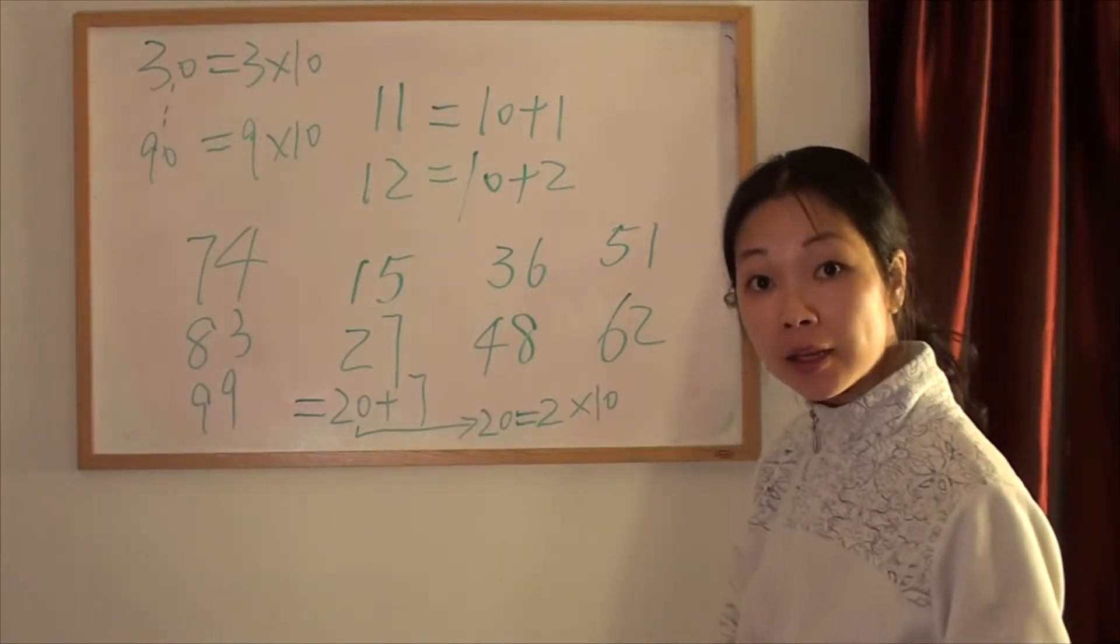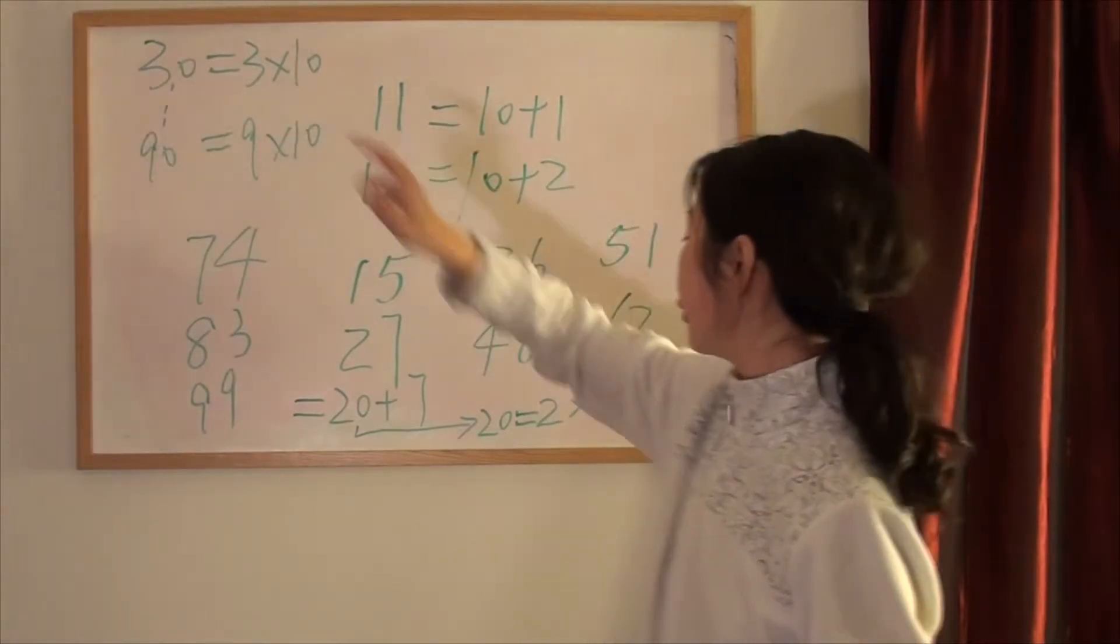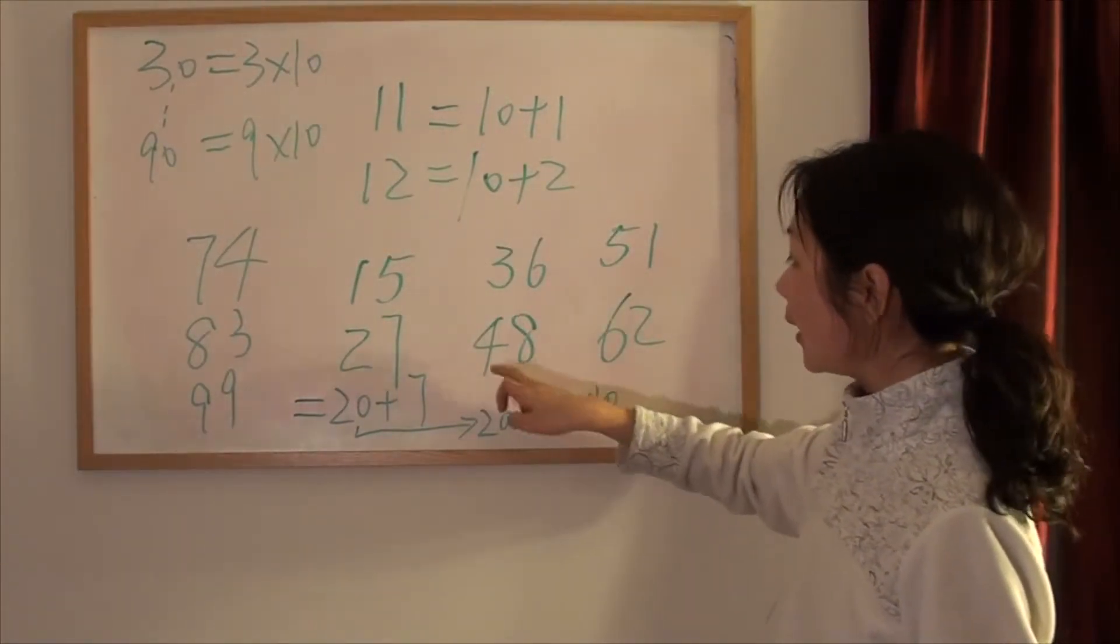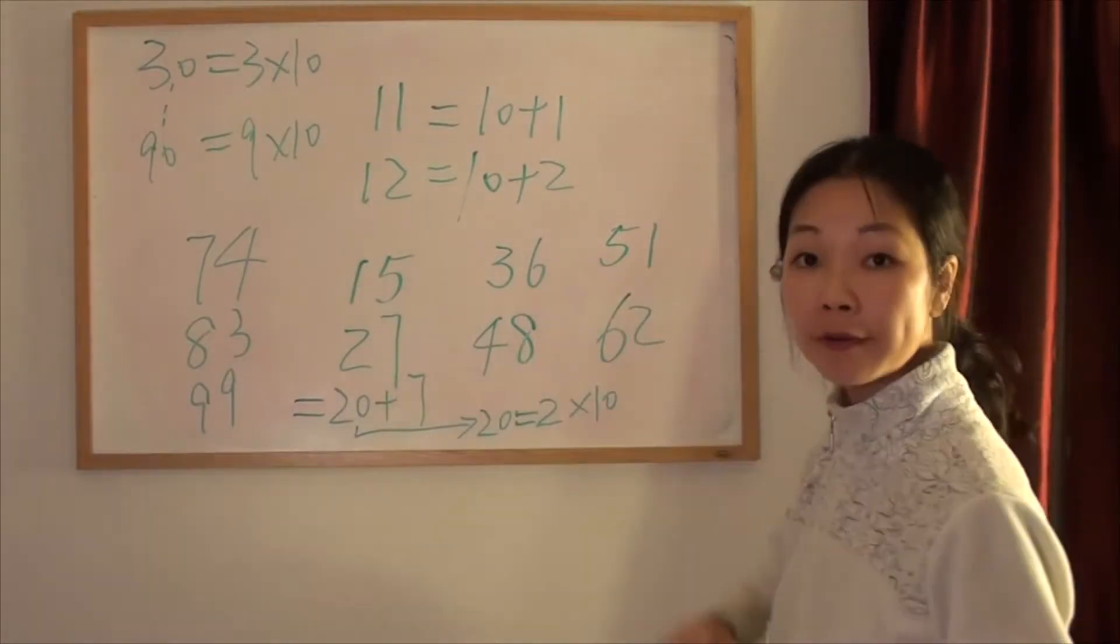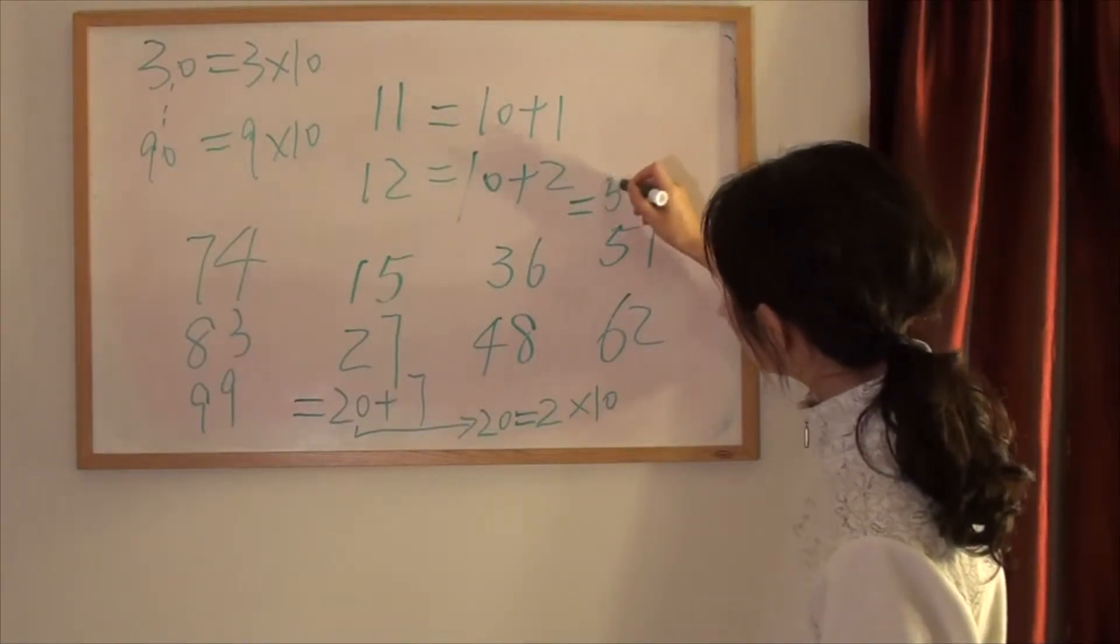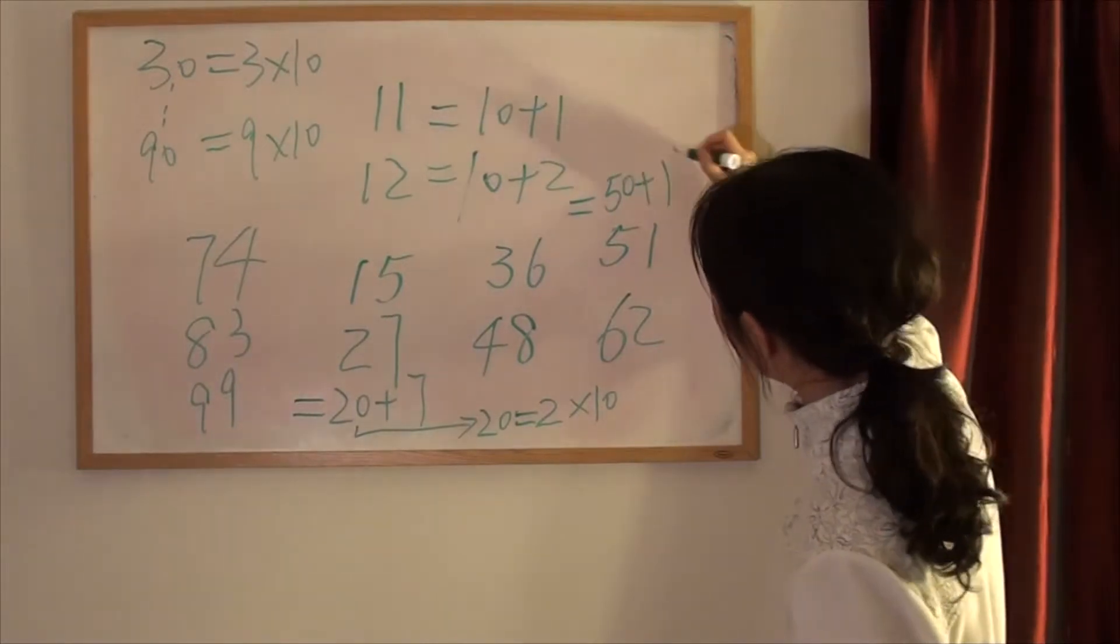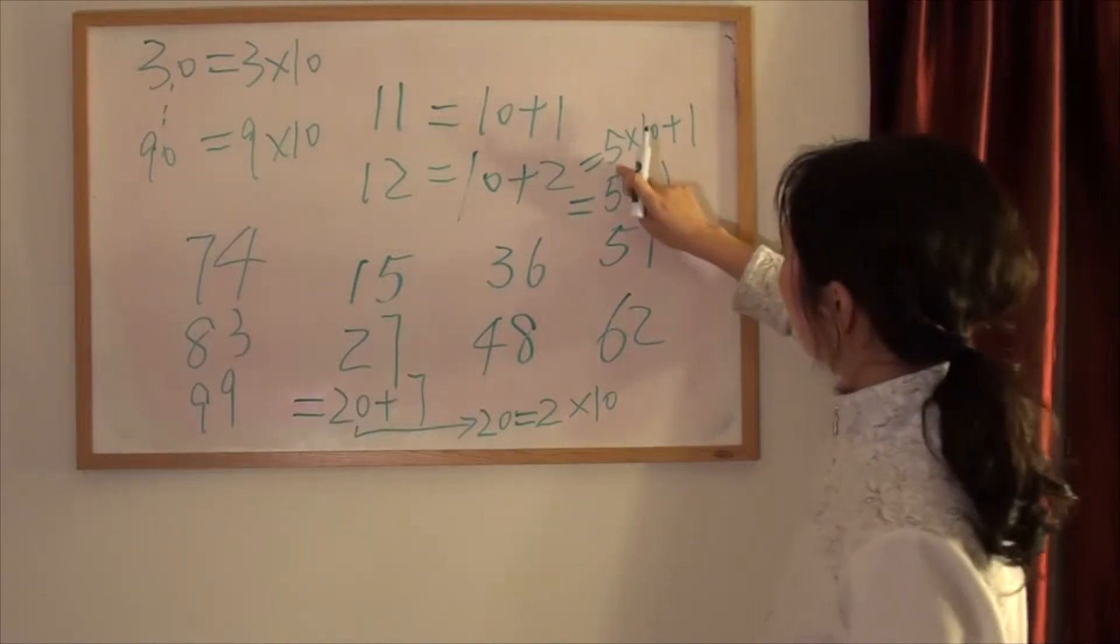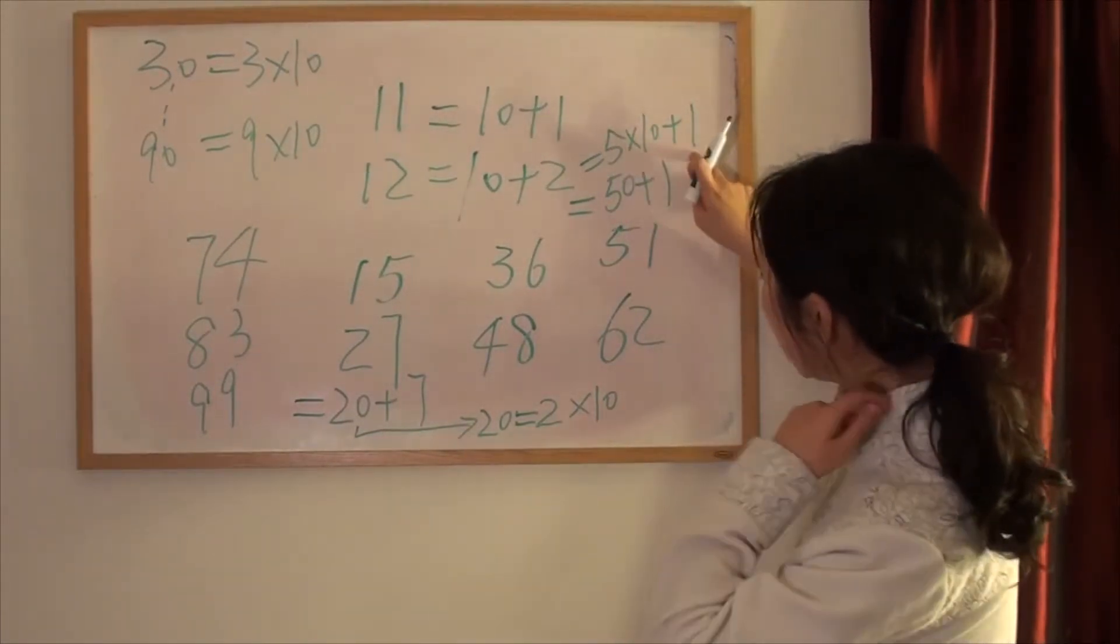How to say 48. 四十, 四十, so 48. 四十八, 四十八. How to say 51. 51. 51 is, or you can do it a little bit better. 五十一, 五十一.